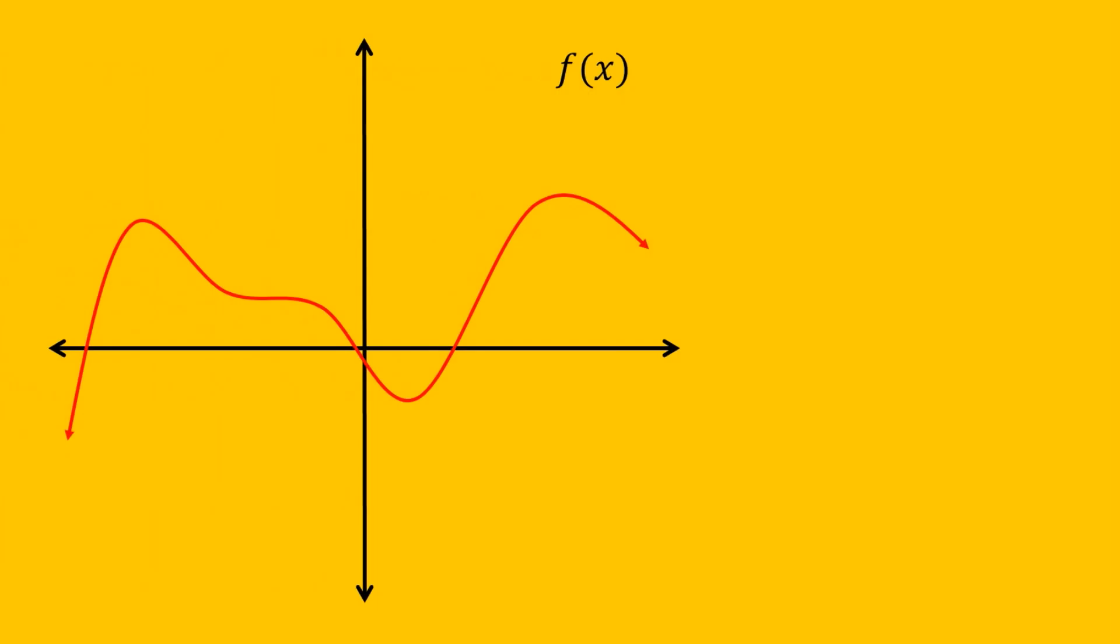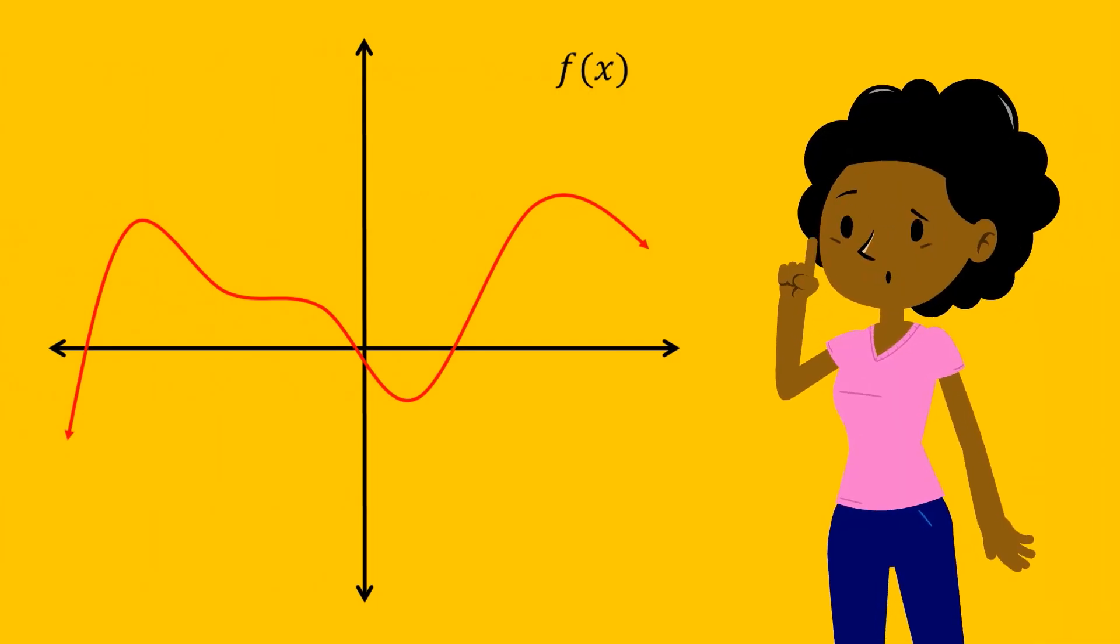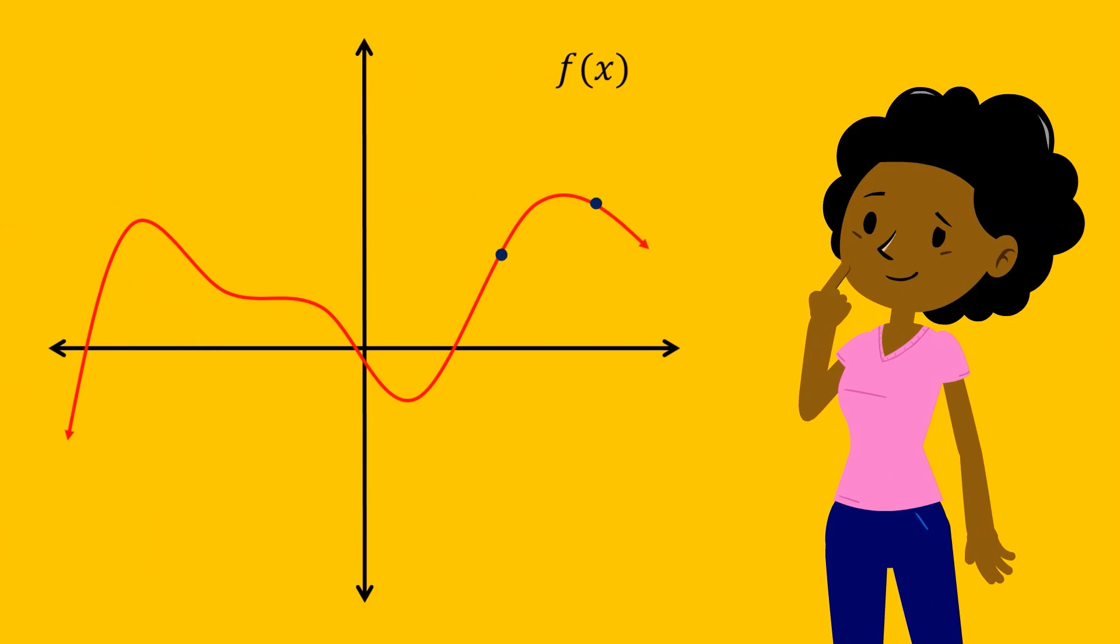When it comes to the instantaneous change of a function, our goal is to describe how a function is changing. The difference between instantaneous change and average change is that we want to describe the change using only a single point rather than between two points.